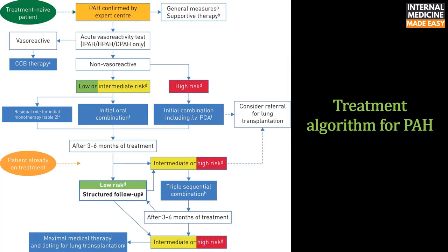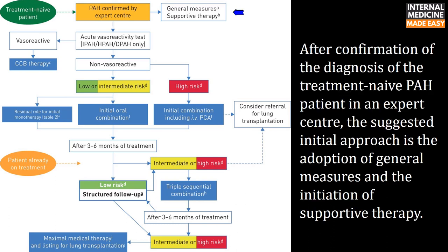This is the treatment algorithm for pulmonary arterial hypertension. After confirmation of diagnosis of treatment-naive PAH in an expert center, the suggested initial approach is the adoption of general measures and the initiation of supportive therapy.